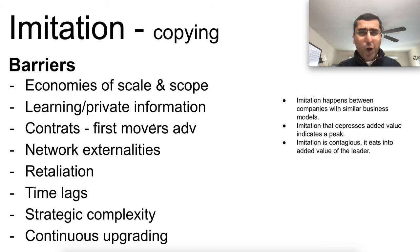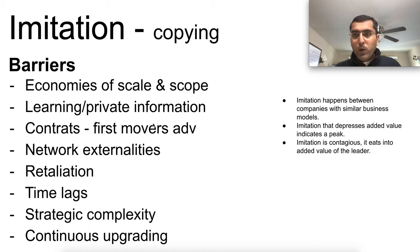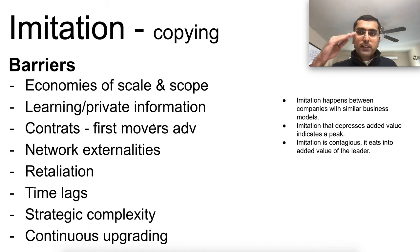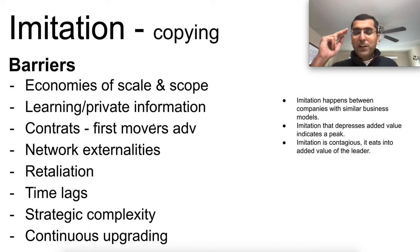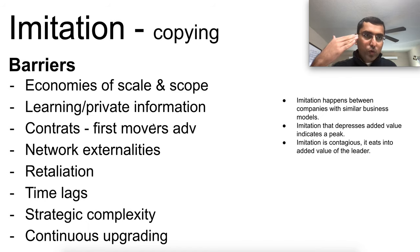Imitation is essentially copying — when a competitor imitates you, they copy your best ideas and try to sell cheaper, giving a discount. It happens between companies with similar business models. When someone imitates you and your market share decreases, it signals a peak. Imitation is also contagious — top players end up competing for the same customers and offering similar features. Compare Apple and Samsung phone features: they're very similar.